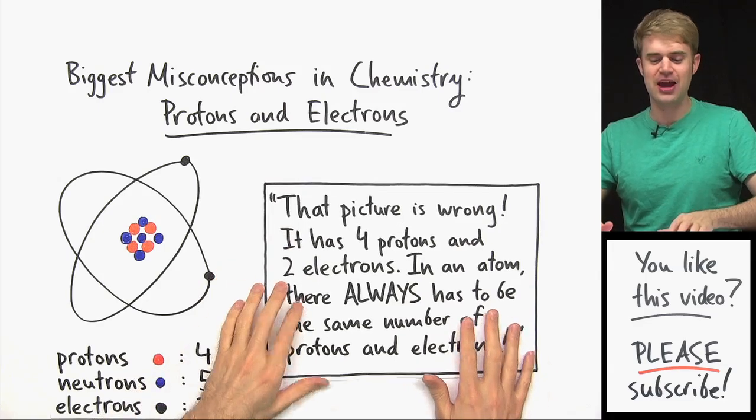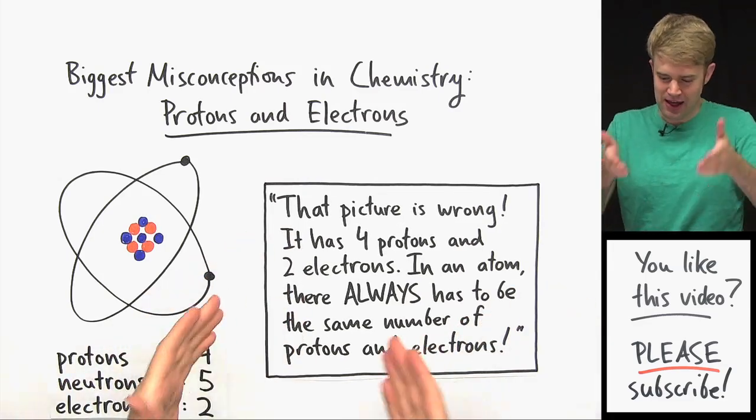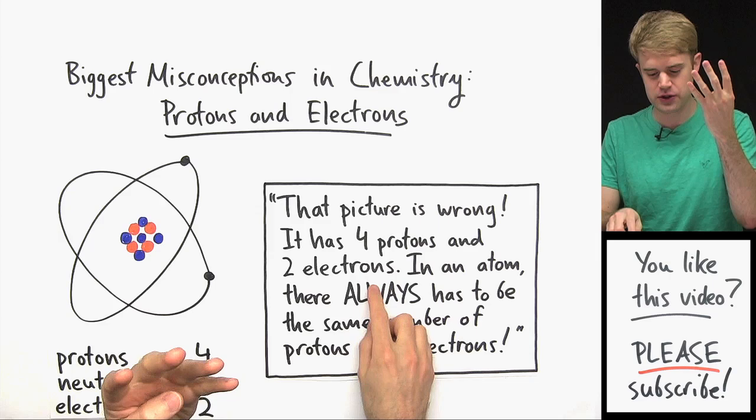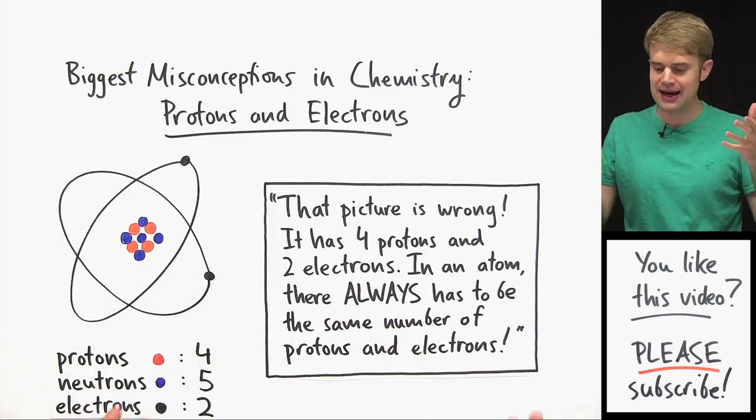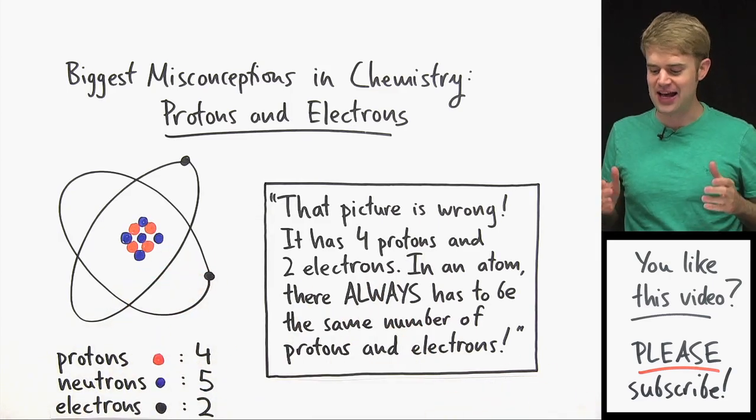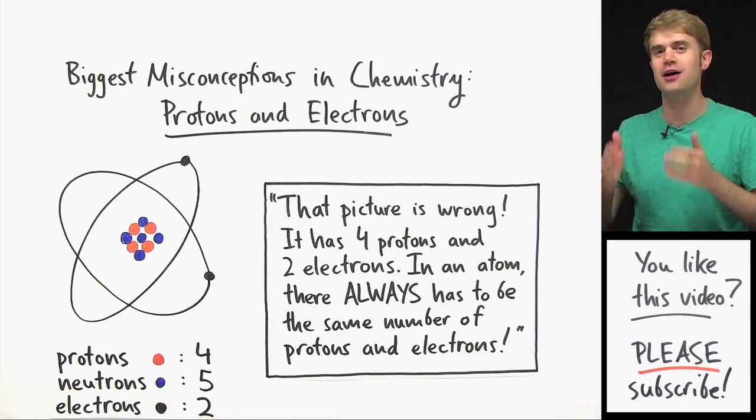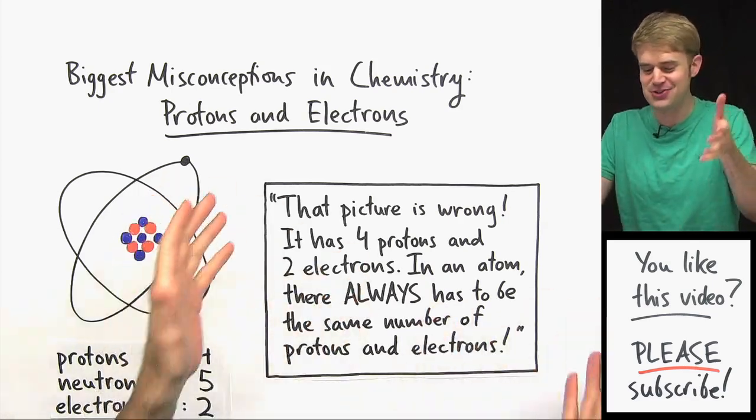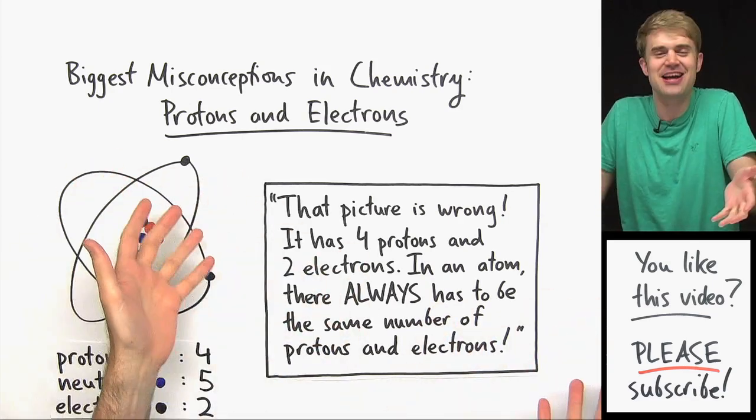I put an atom like this in my video and before I know it, there are tons of comments and they all sound like this: 'That picture is wrong. It has four protons and two electrons. In an atom there always has to be the same number of protons and electrons.' Well, I don't know what to say but this just isn't right.